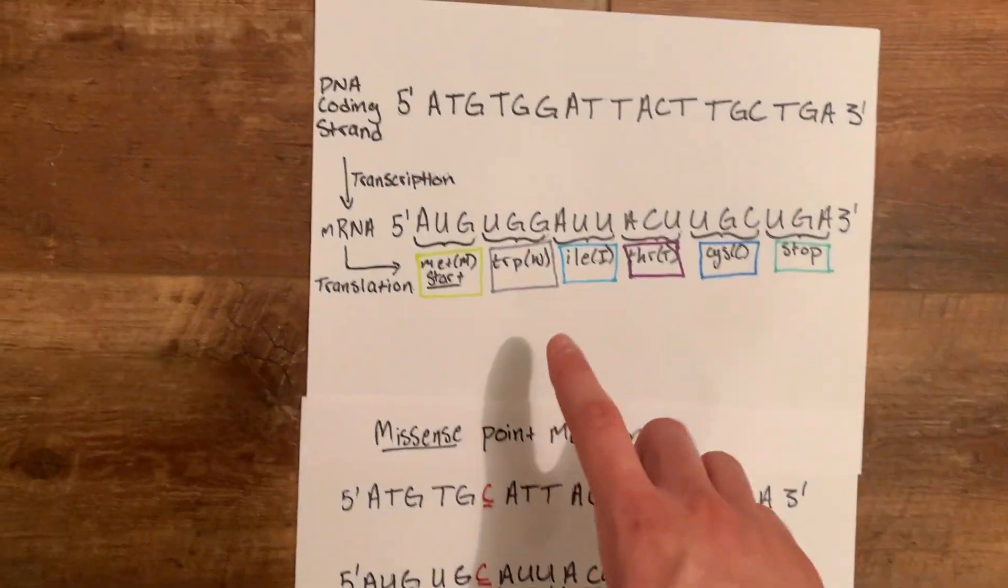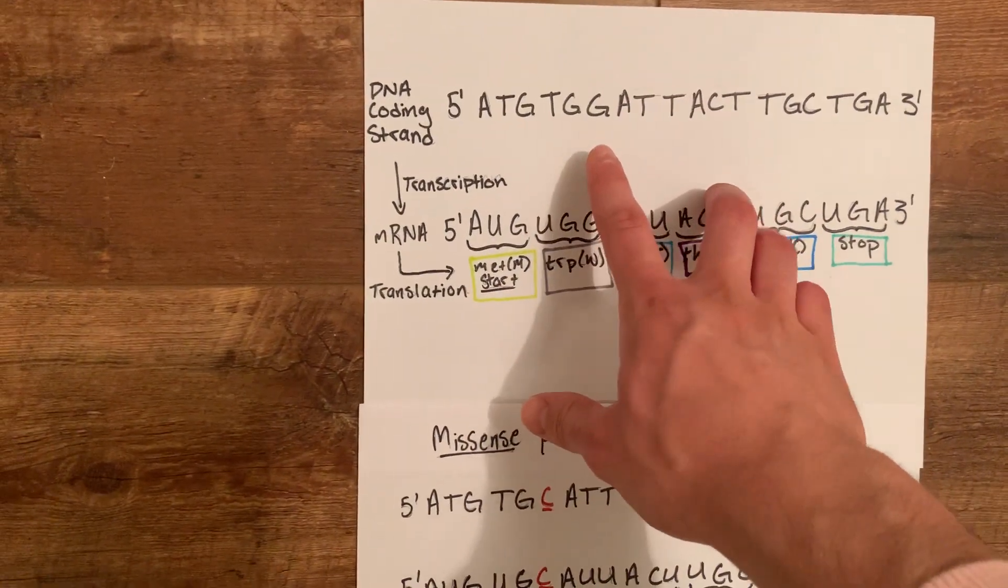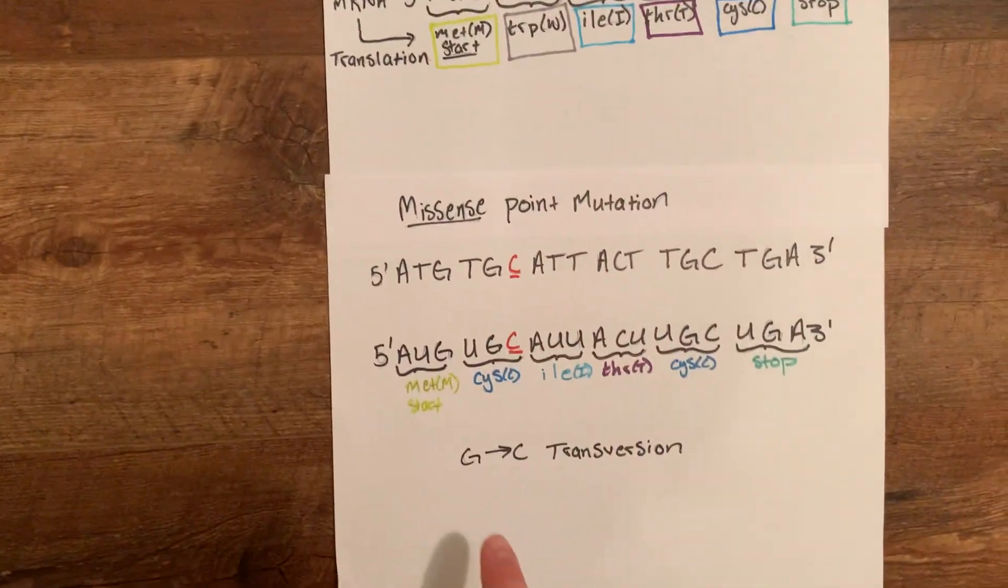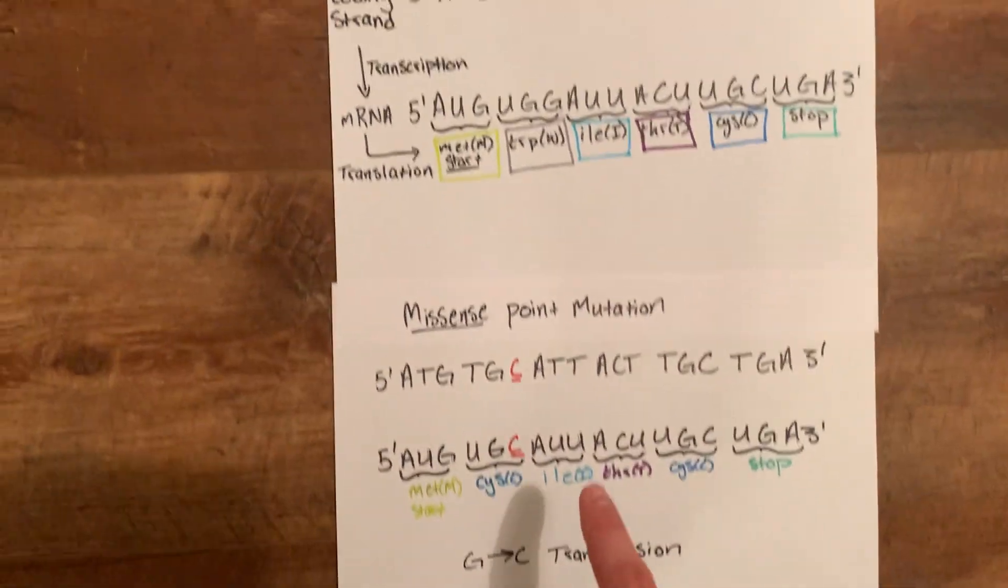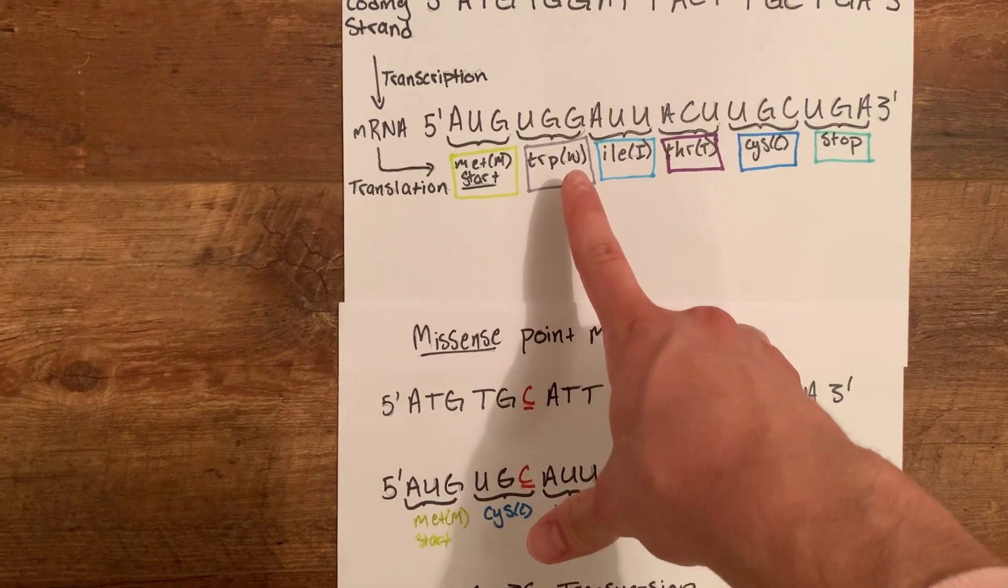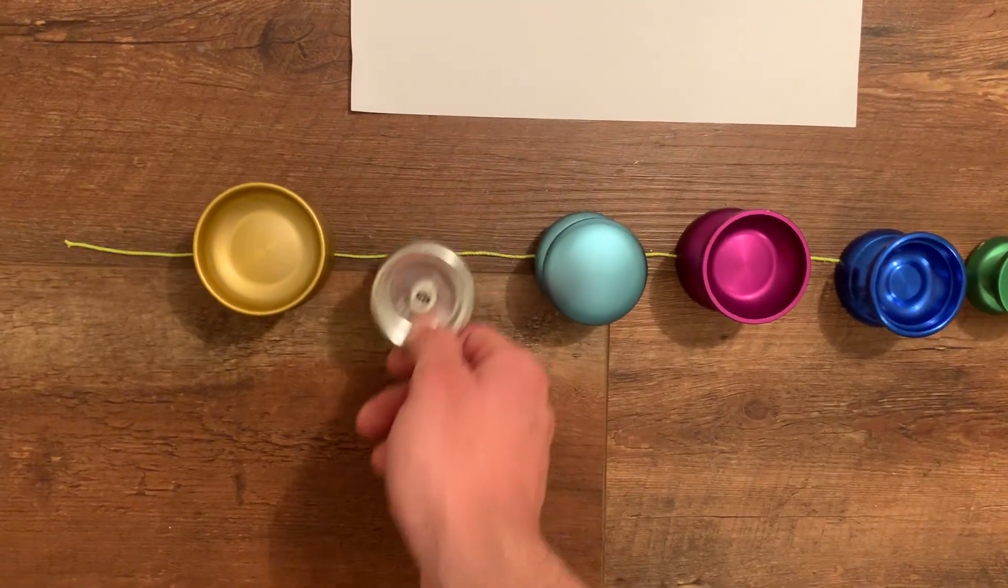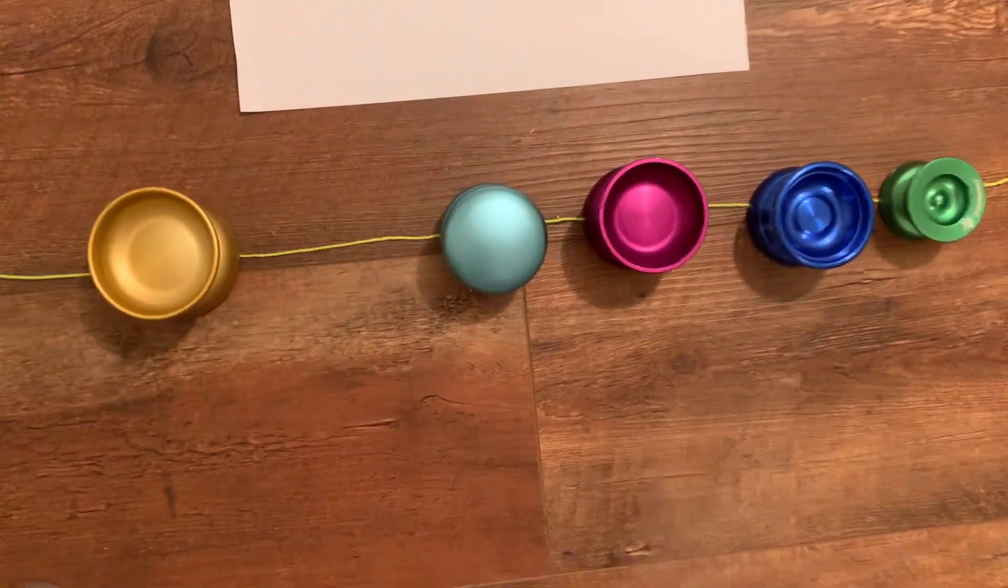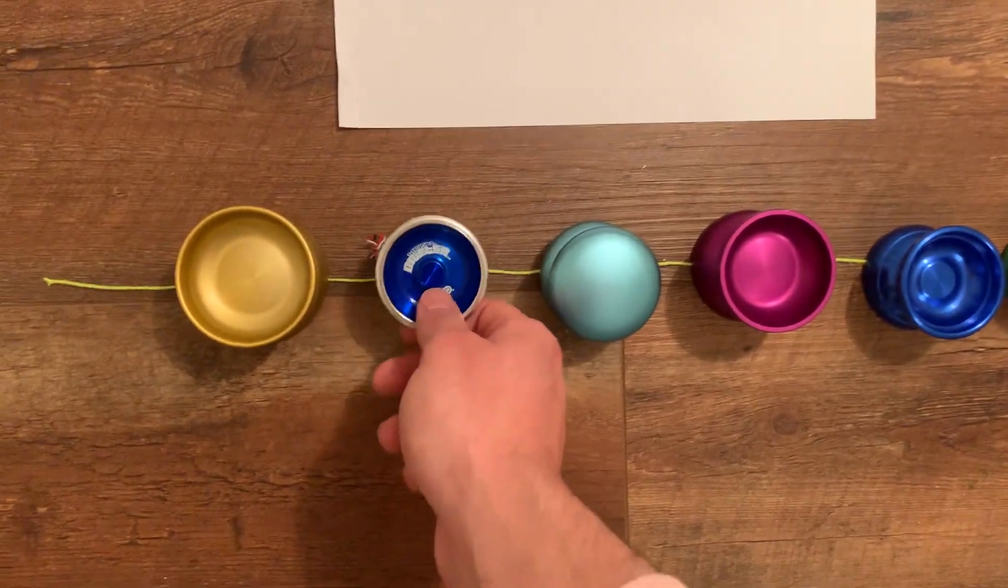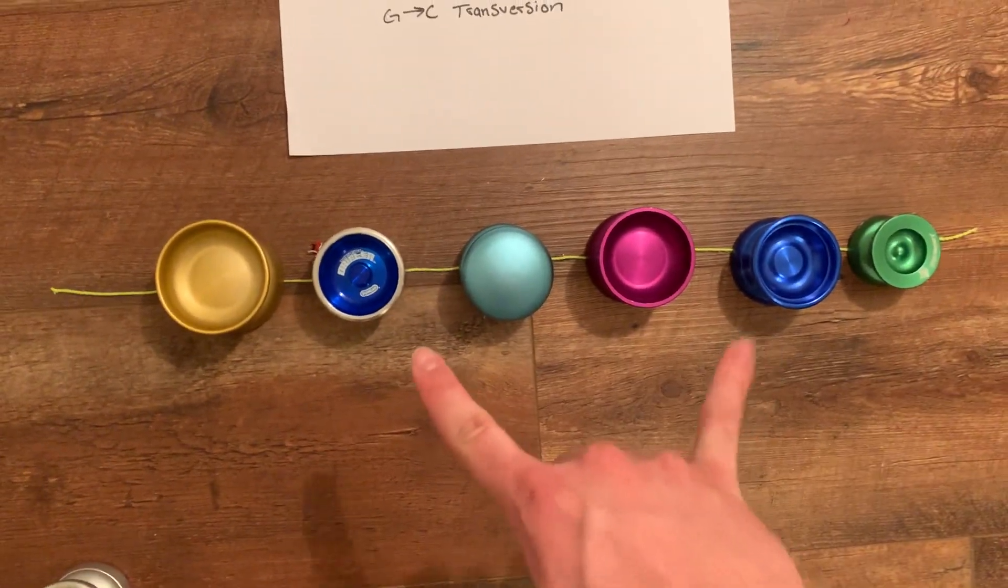So here we initially had a G and we are replacing it with a C. This is a G to C transversion. Initially we had this W amino acid, but now we have the C amino acid. So if we go over here to our amino acid sequence, we take out the initial W and we now have a C in place. So we have two C's here.